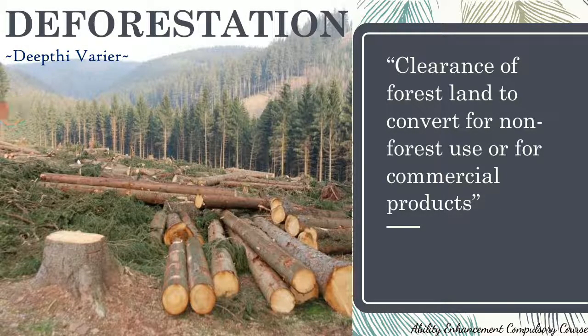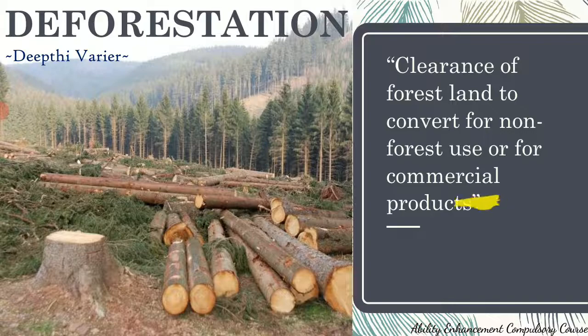In today's lecture we will be looking at one of the major types of land degradation, that is deforestation. Like the name says, deforestation essentially means the removal of forests or clearance of forest land to convert that forest land into a non-forest purpose — for example, farmland, a ranch, or an urban settlement, or conversion of forest products into a commercial purpose such as using the timber for a commercial product.